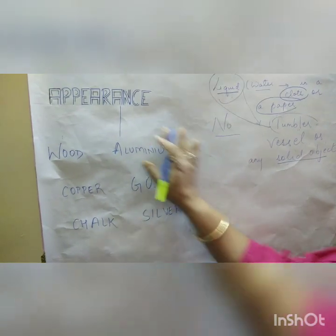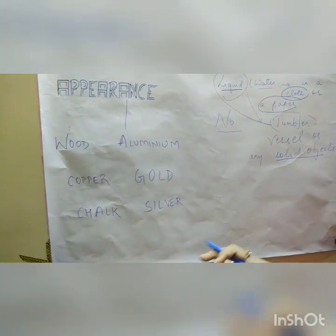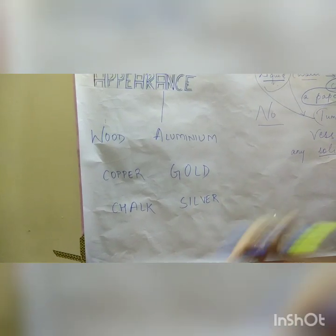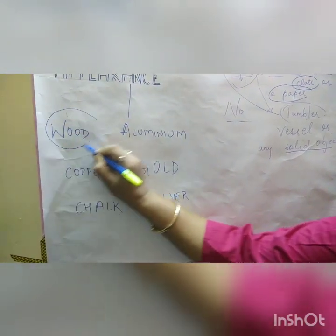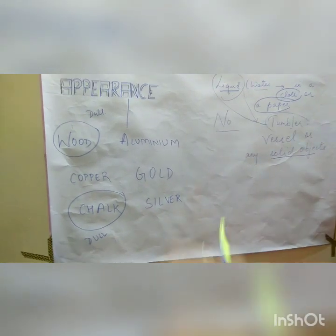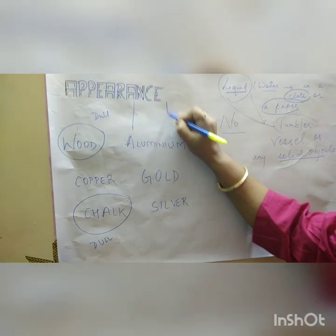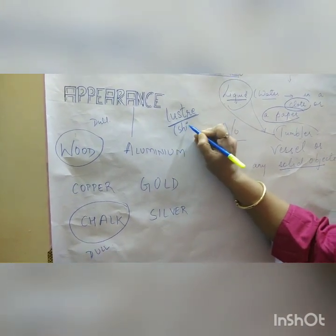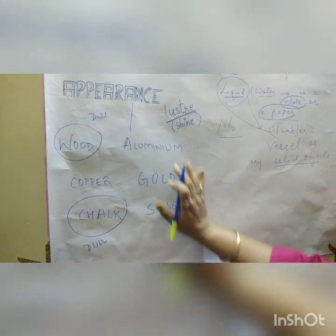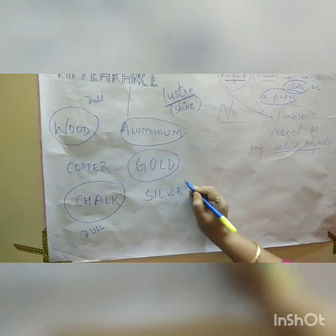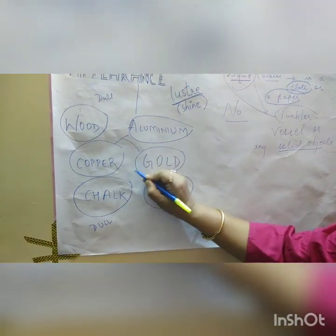According to properties, you will classify the objects. If the question is 'things which are dull,' your answer will be wood — dull, and chalk — dull. The opposite question: things which are shiny. In chemistry, the word for shiny is lustre. So in the book if you find this word, don't get confused. If I ask you which objects are shiny, you will say aluminium, gold, silver, and copper — so they have the property of lustre.